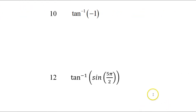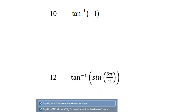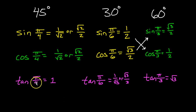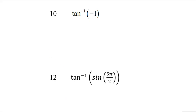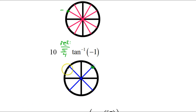Inverse tangent is just an angle — it's the angle whose tangent is negative 1. What angle has a tangent of negative 1? Let's think about what angle has a tangent of positive 1 — that's one of the things we memorize. Tangent of pi over 4 is positive 1. So the reference angle is pi over 4. These are the four angles that have a reference angle of pi over 4.